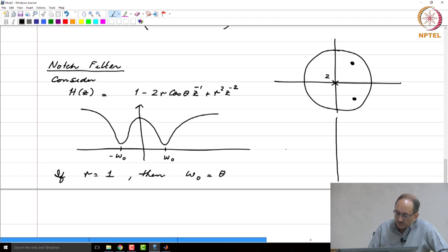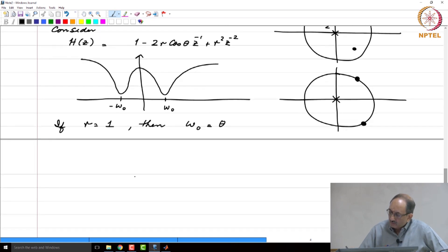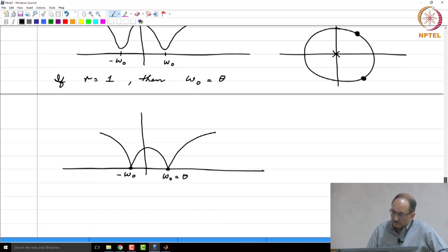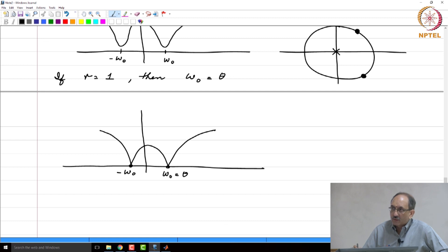So, the picture corresponding to that is this. Now, the zeros are on the unit circle and the frequency response now has this shape and this omega naught is now theta. And to such a system or to such a filter, if you applied an input which was cos omega naught n, then what will be the output? Output will be 0.